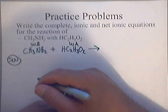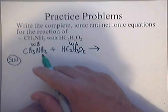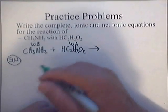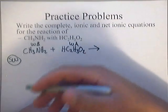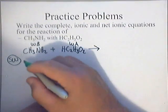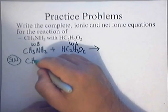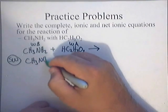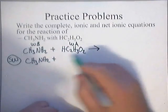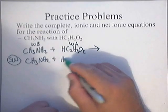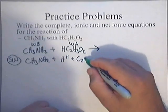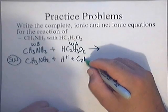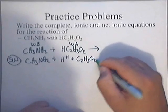Don't even worry about showing its lone pairs that it's going to have on the nitrogen. Just do it the way that I do it, and it'll help you figure out your products pretty quickly. So I'm just going to write down my base, CH3NH2 plus, but I'm going to break my acid down so we can look at it. H plus one and acetate ion, C2H3O2 negative one.